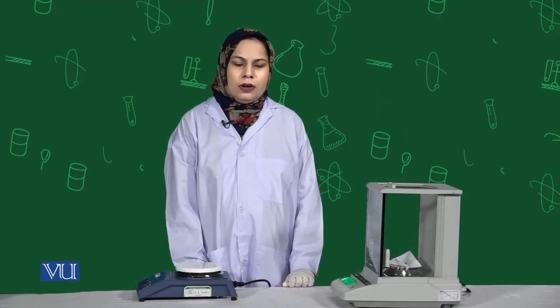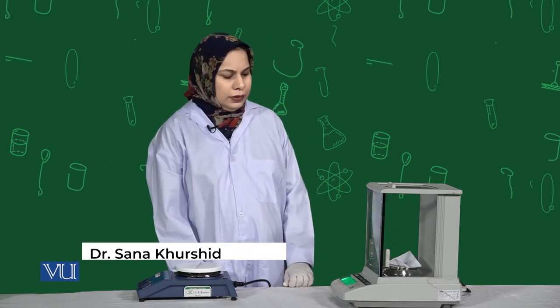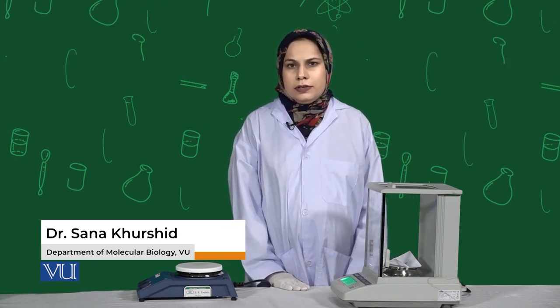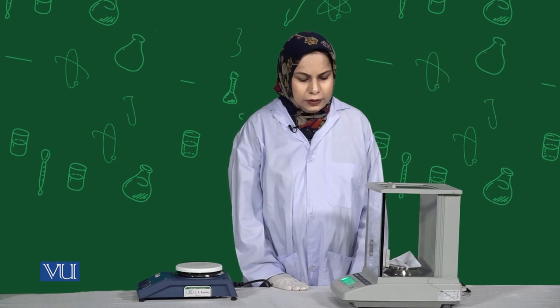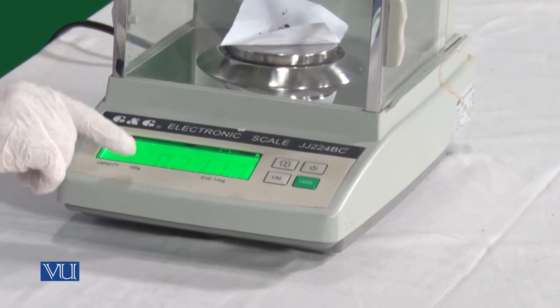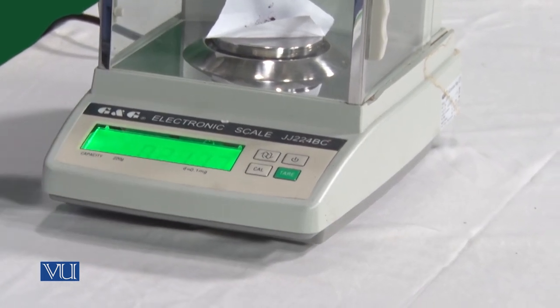Students, now we are going to prepare 10 mg per ml ethidium bromide solution. Ethidium bromide is a chemical used to stain DNA while running a gel electrophoresis procedure. For this, we need 0.2 grams of ethidium bromide powder. This powder is carcinogenic because it can bind to DNA, so you have to be very careful while handling this powder. I have already measured 0.2 grams of ethidium bromide powder.